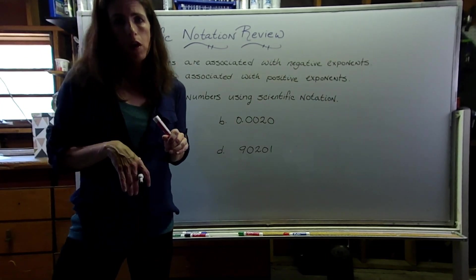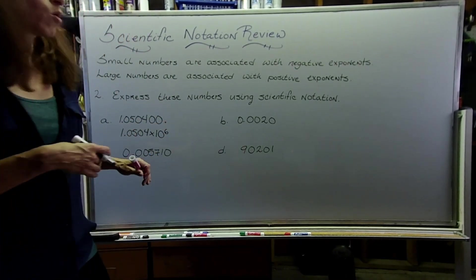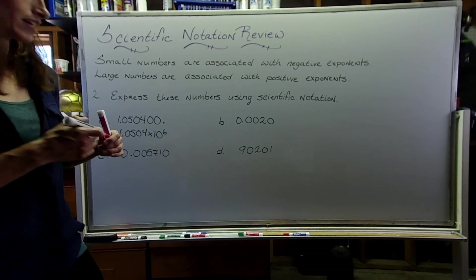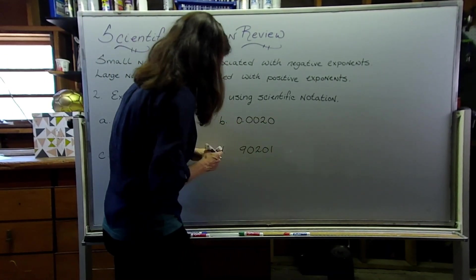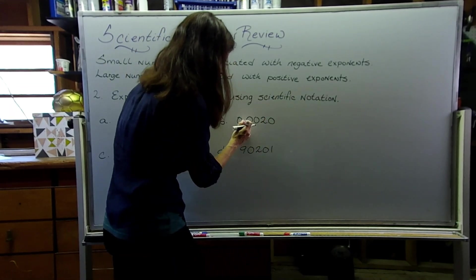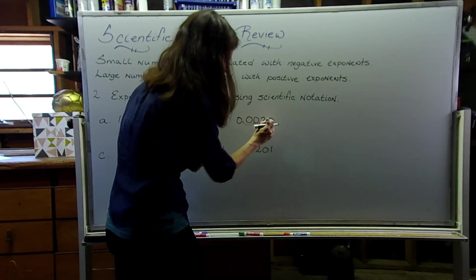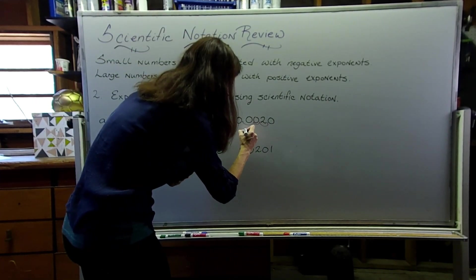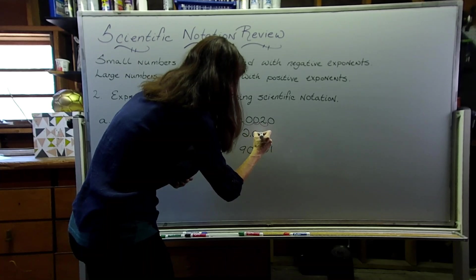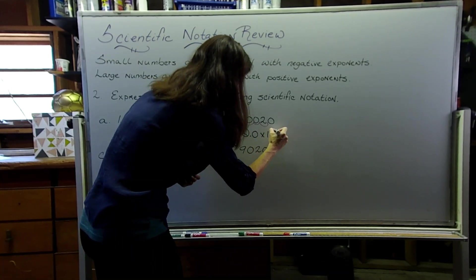Here we have a very small number, and so we know that it's going to have a negative exponent associated with it. So I need to move the decimal place all the way to here. So I'm going to do 1, 2, 3 jumps. And so this is going to wind up being 2.0 times 10 to the negative 3.